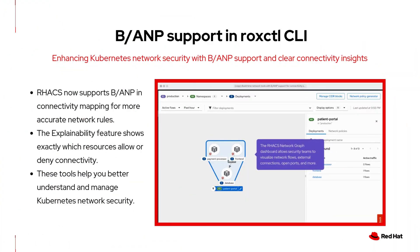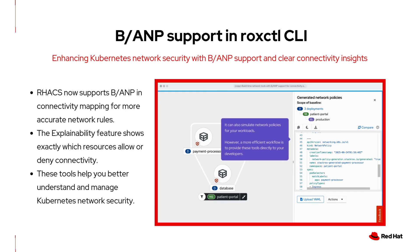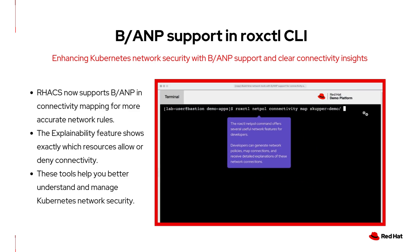ACS 4.8 adds powerful improvements to the BuildTime network tools. You now get enhanced connectivity mapping with support for admin network policies and baseline admin network policies, letting you define these policies before workloads are deployed. It also introduces a new explainability feature that shows exactly which resource and rule either allows or blocks workload connectivity, helping admins better understand and troubleshoot complex network policy behavior.